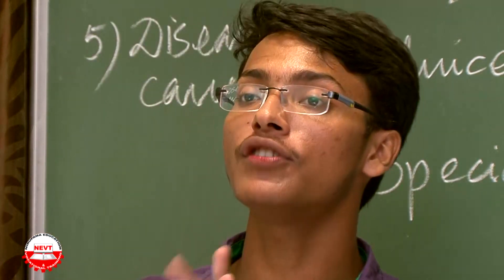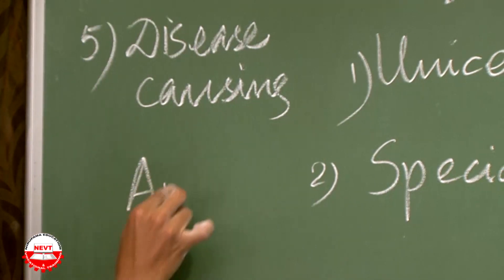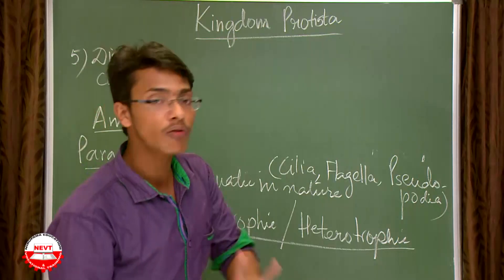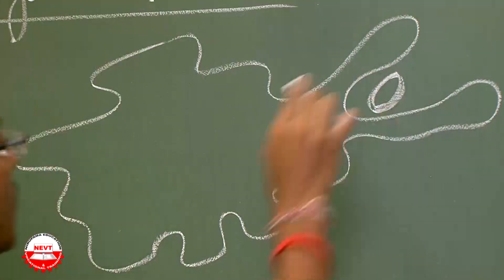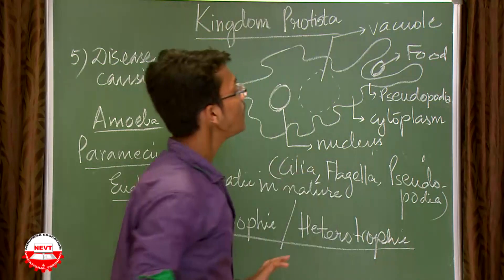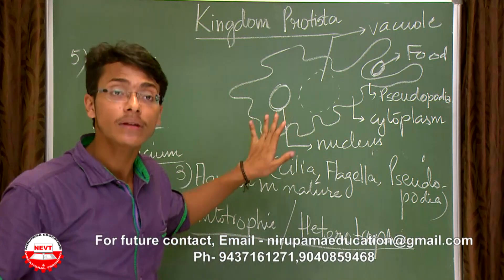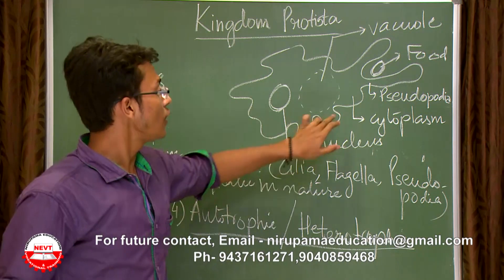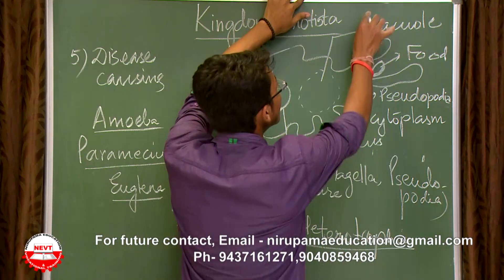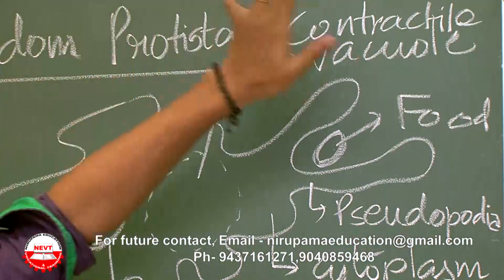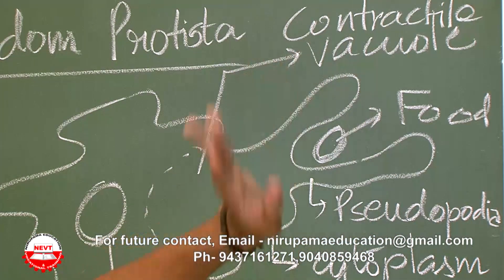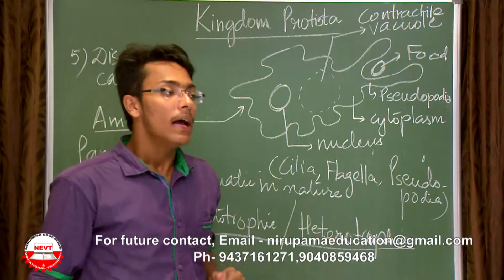Examples of Protista include Amoeba, Paramecium, and Euglena. Looking at the structure of Amoeba: it has a nucleus suspended in cytoplasm, a contractile vacuole, food particles, and pseudopodia engulfing food particles. This is the basic structural outline of Amoeba.